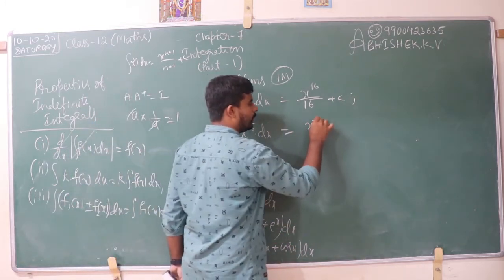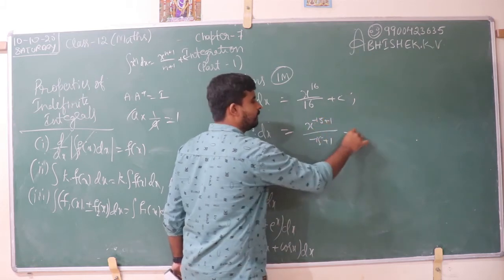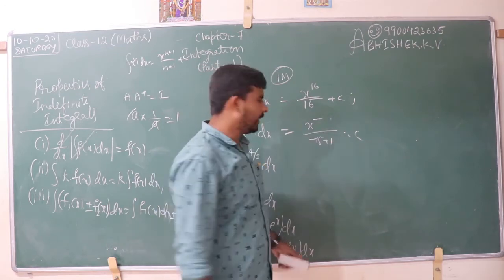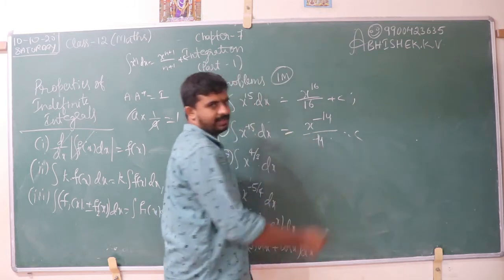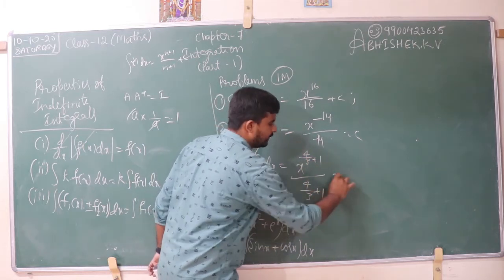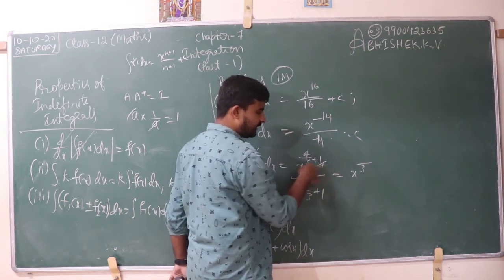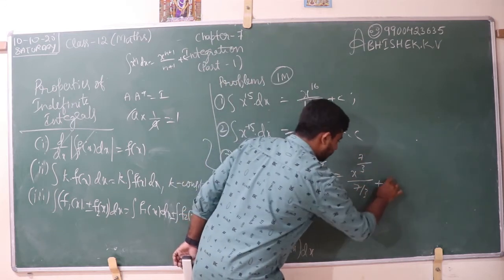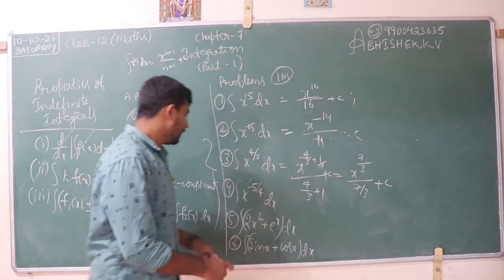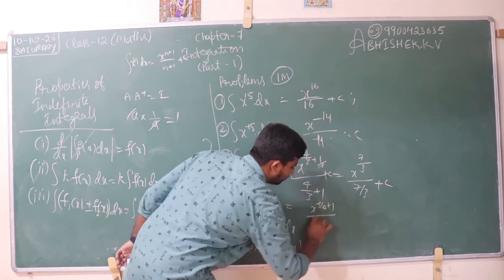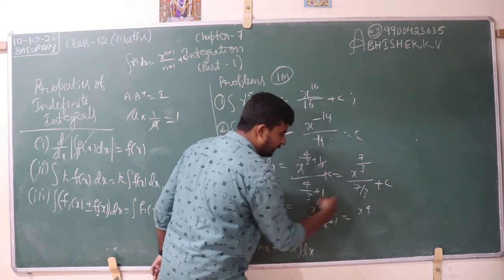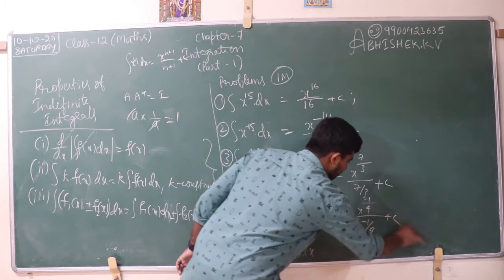For x to the power 4 by 3: n equals 4 by 3, so 4 by 3 plus 1 divided by 4 by 3 plus 1. The LCM is 3, giving 4 plus 3 equals 7, so the result is x to the power 7 by 3 divided by 7 by 3 plus c. Don't forget to add c. For x to the power minus 5 by 4: x to the power minus 5 by 4 plus 1 divided by minus 5 by 4 plus 1. The LCM is 4, giving minus 5 plus 4 equals minus 1, so the result is x to the power minus 1 by 4 divided by minus 1 by 4 plus c.